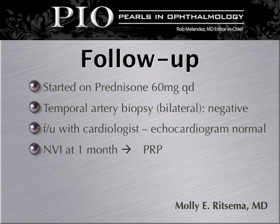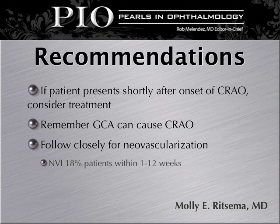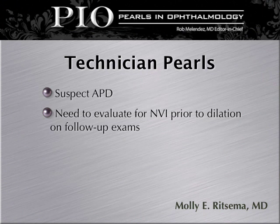The patient was referred to the cardiologist for an echocardiogram, which was normal. Follow-up at one month revealed presence of neovascularization of the iris, for which the patient received PRP — panretinal photocoagulation laser. Recommendations: if patients present shortly after the onset of a CRAO, consider treatment. Remember GCA in the differential diagnosis of CRAO, and follow closely for neovascularization. Technician pearls: encourage your technicians to suspect an APD with any sudden loss of vision and evaluate for neovascularization of the iris prior to dilation on follow-up examinations.